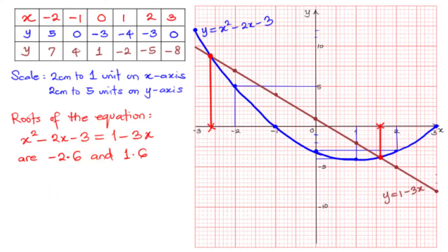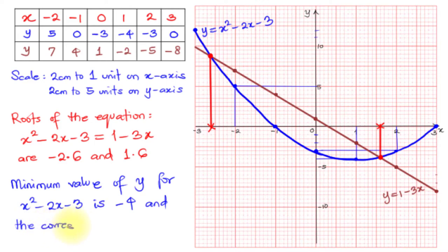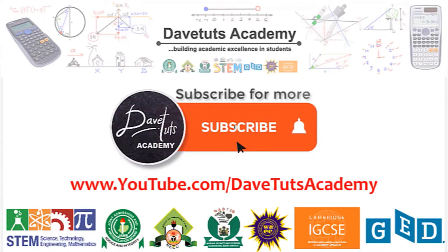Finally, we find the minimum value of y for the quadratic equation y = x² - 2x - 3. Looking at the curve, the lowest point corresponds to y = -4. From the table, this occurs when x = 1. Therefore, the minimum value of y is -4, and the corresponding value of x is 1.